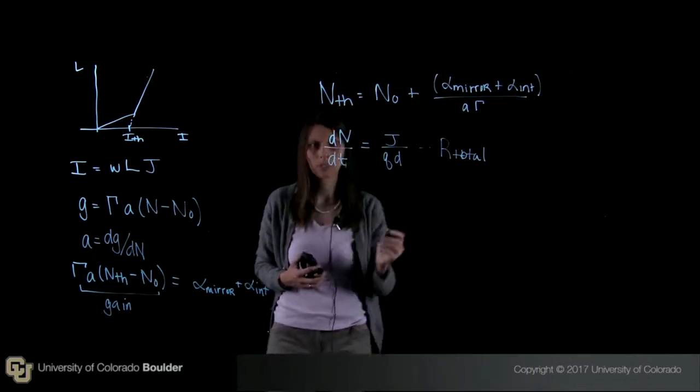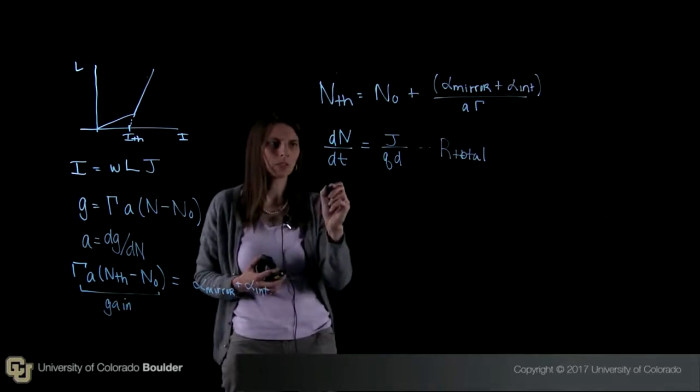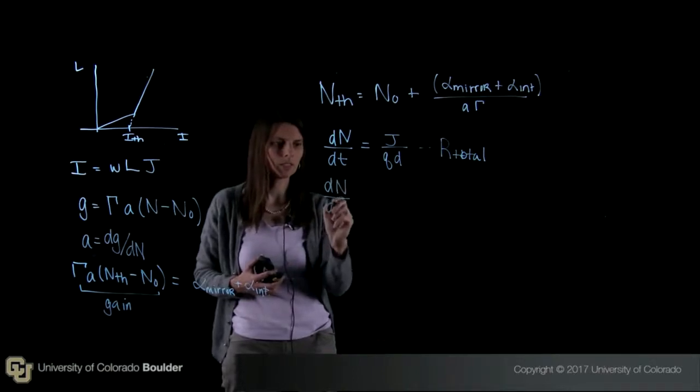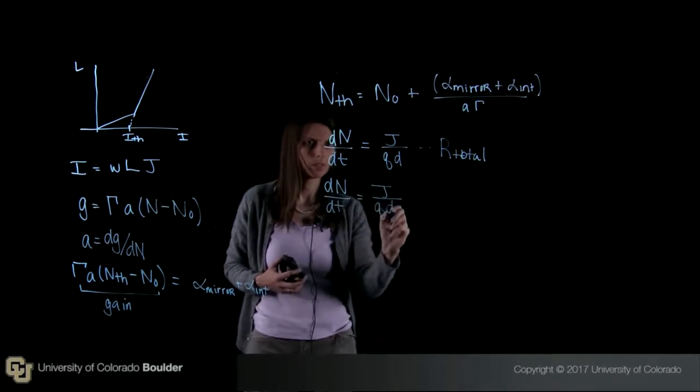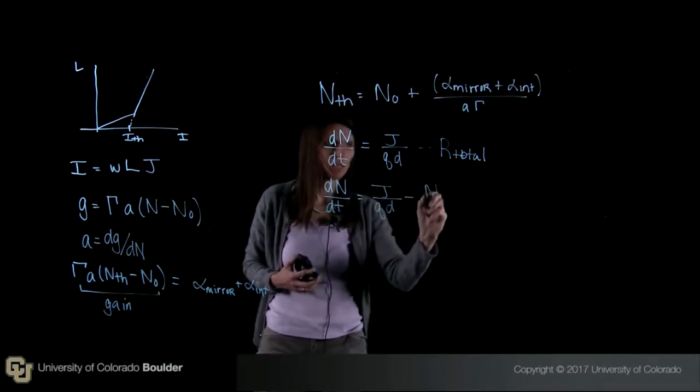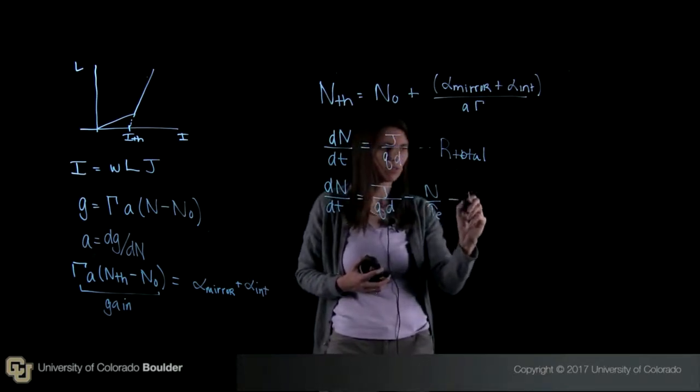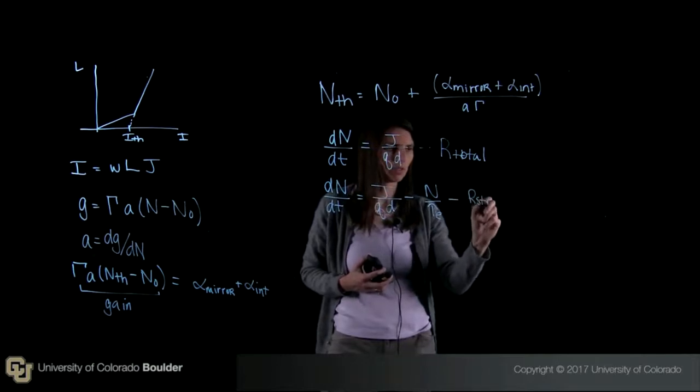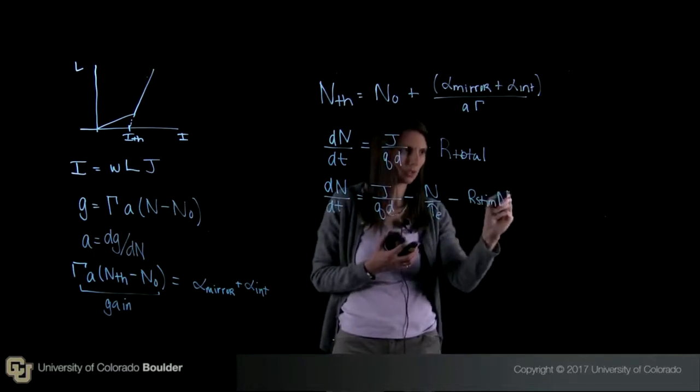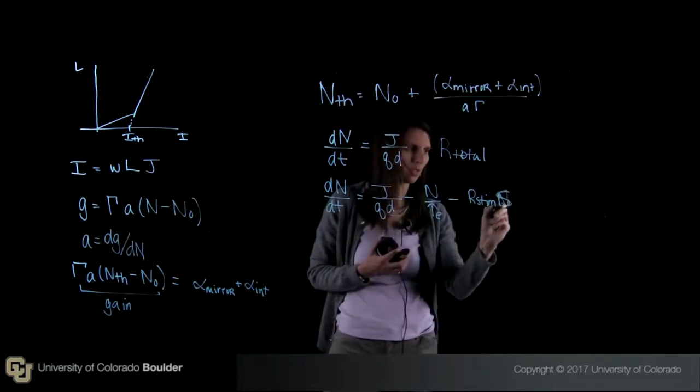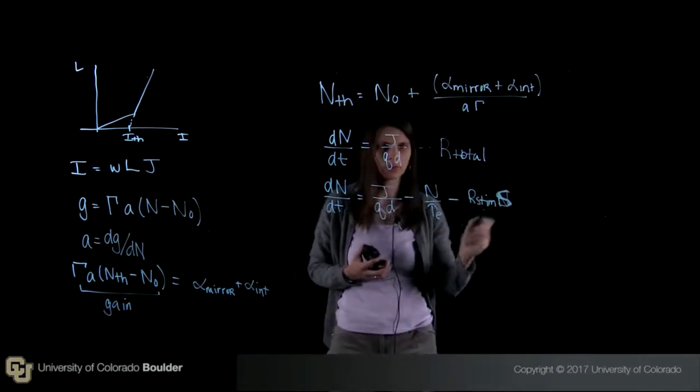If we want, we can split this out and write this slightly differently. So we can write that dn/dt equals j over qd minus n over tau e, the electron lifetime, minus r stimulated times s. This is essentially the stimulated emission rate and the number of photons.